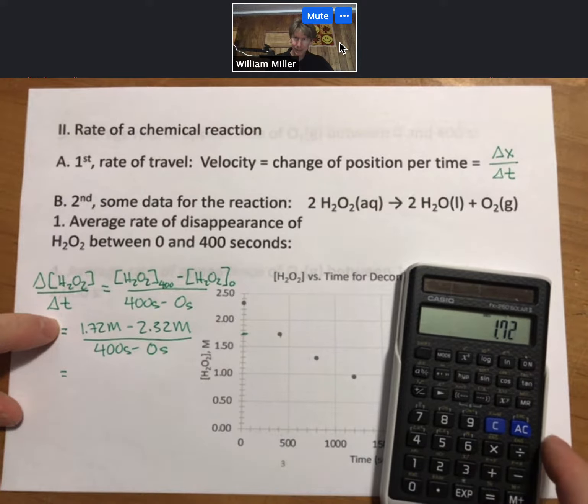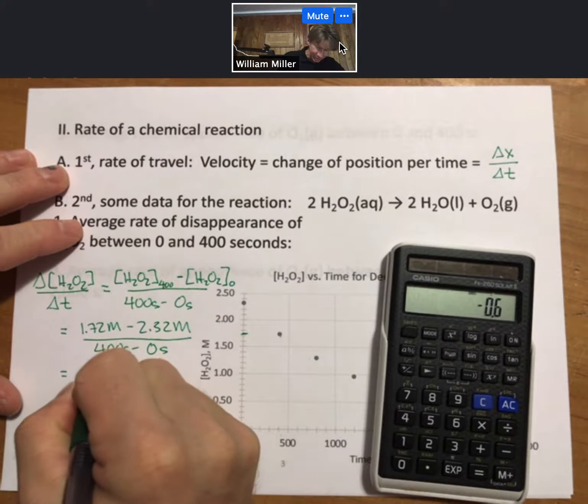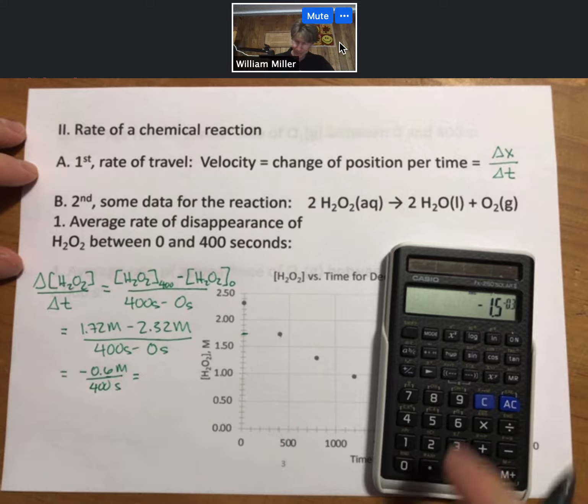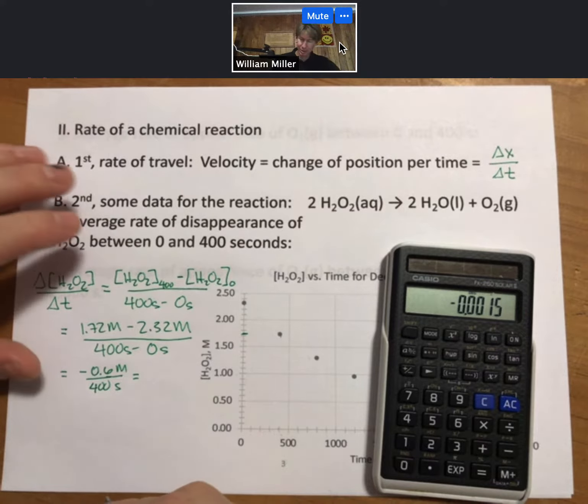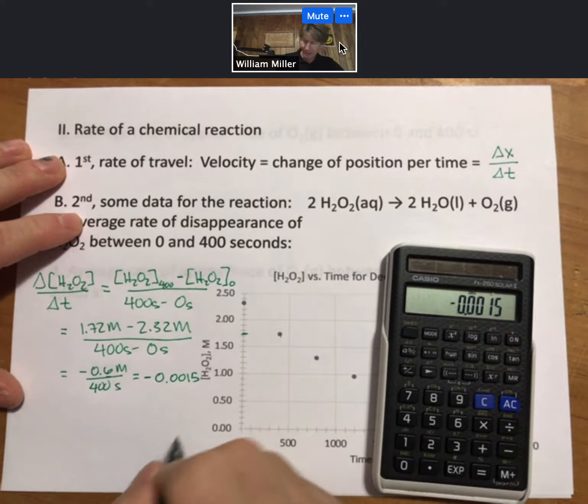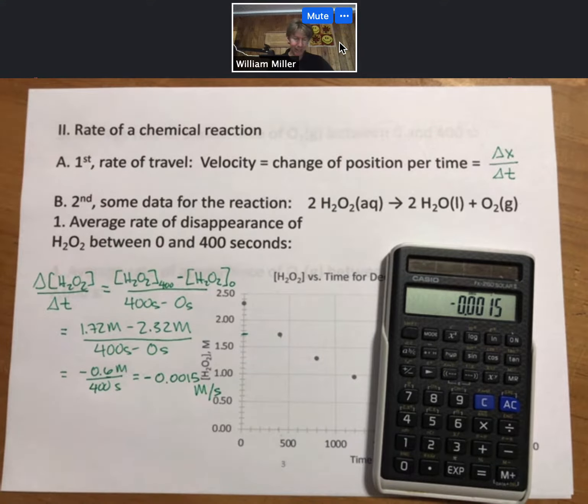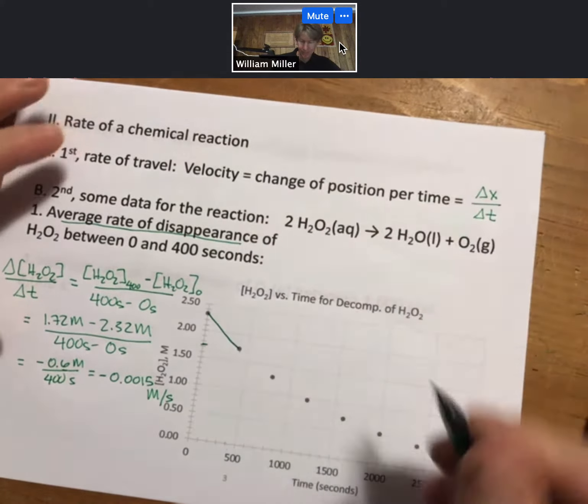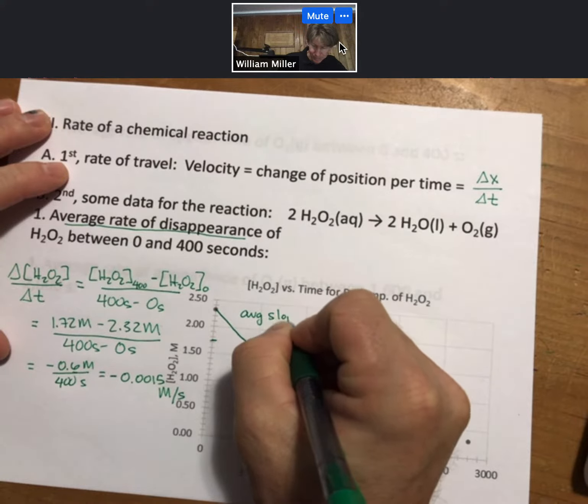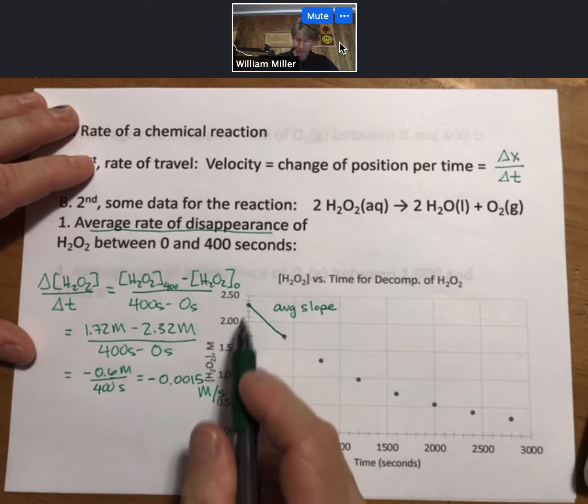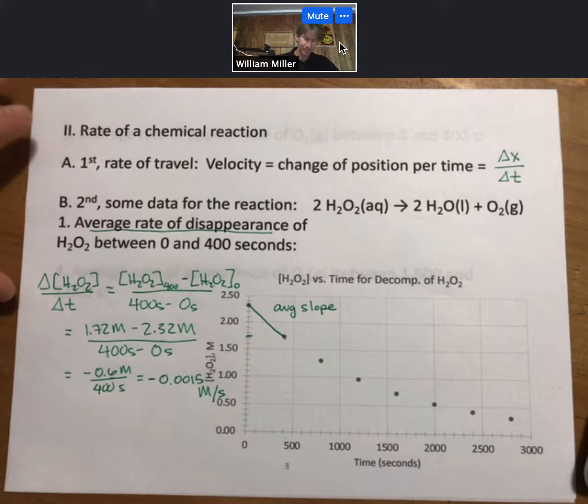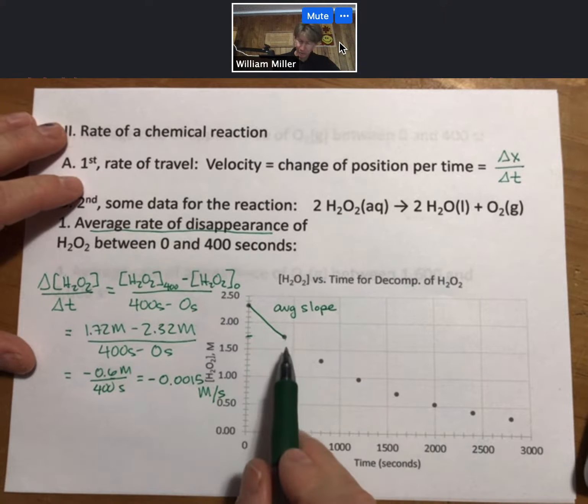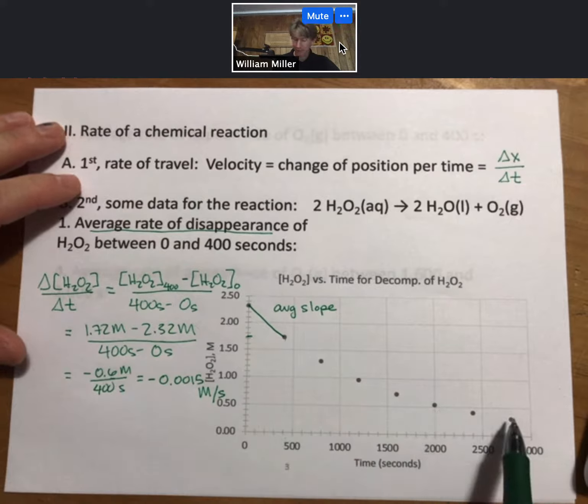And I can calculate this out. 1.72 minus 2.32, I get minus 0.6 molarity over seconds. Divide that by 400 seconds, I get minus 0.0015. And that's going to have units of molarity per second. And that is my average rate of disappearance. And really what I'm doing is I'm taking between these two points, I'm taking the average slope. Average slope between those two points. And you can see that the slope is negative. So my answer is negative here. That's no surprise. And what we would see is that if we were to then do this over time, then we would see that the slope is getting closer to zero.